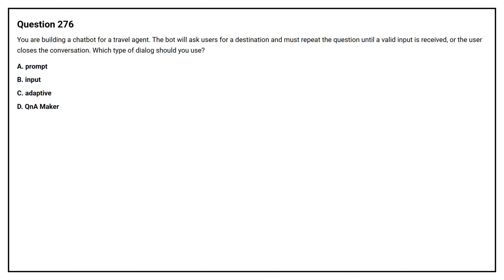Question number 276. You are building a chatbot for a travel agent. The bot will ask users for a destination and must repeat the question until a valid input is received or the user closes the conversation. Which type of dialogue should you use? Option A: Prompt. Option B: Input. Option C: Adaptive. Option D: QnA Maker.